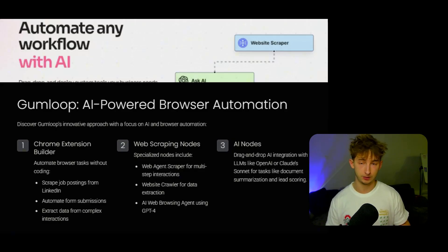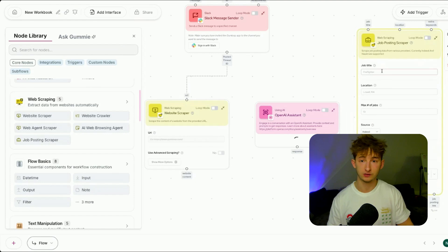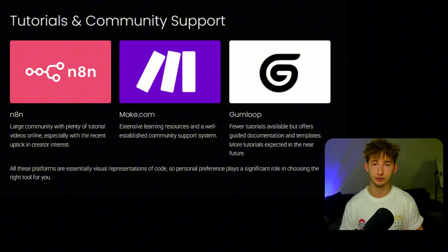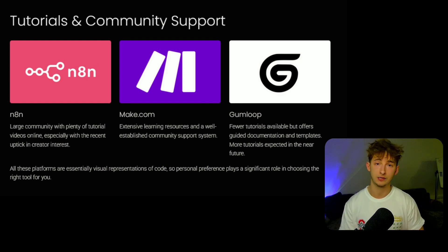Gumloop also has AI nodes generally speaking — it simplifies AI integration with drag-and-drop nodes, similar to N8N and Make.com, powered by whatever LLM you choose like OpenAI or Claude Sonnet, and can be used for tasks like document summarization or lead scoring. Their AI nodes allow some really niche, practical solutions. When it comes to learning resources, both N8N and Make.com have pretty large communities and plenty of tutorial videos online. Especially as more creators are switching to N8N recently, there's been a huge uptick in videos. Since Gumloop is a newer player, they have fewer tutorials available, but they do offer advanced documentation and templates. If you'd like, I could start posting some Gumloop tutorials — just let me know in the comments.